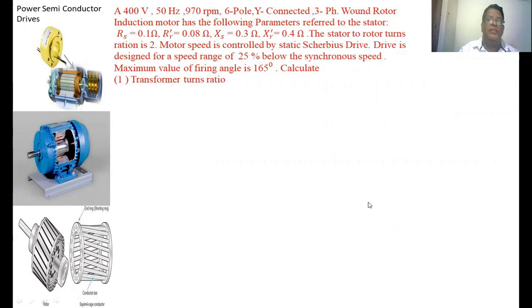A 400V, 50Hz, 970 RPM, 6-pole, star-connected, 3-phase wound rotor induction motor has the following parameters referred to the stator: stator resistance Rs = 0.11Ω, rotor resistance Rr' = 0.084Ω, stator leakage reactance Xs = 0.31Ω, rotor leakage reactance Xr' = 0.41Ω. The stator to rotor turns ratio is 2. Motor speed is controlled by static Scherbius drive designed for a range of 25% below synchronous speed. Maximum firing angle is 165°. Calculate: (1) Transformer turns ratio.